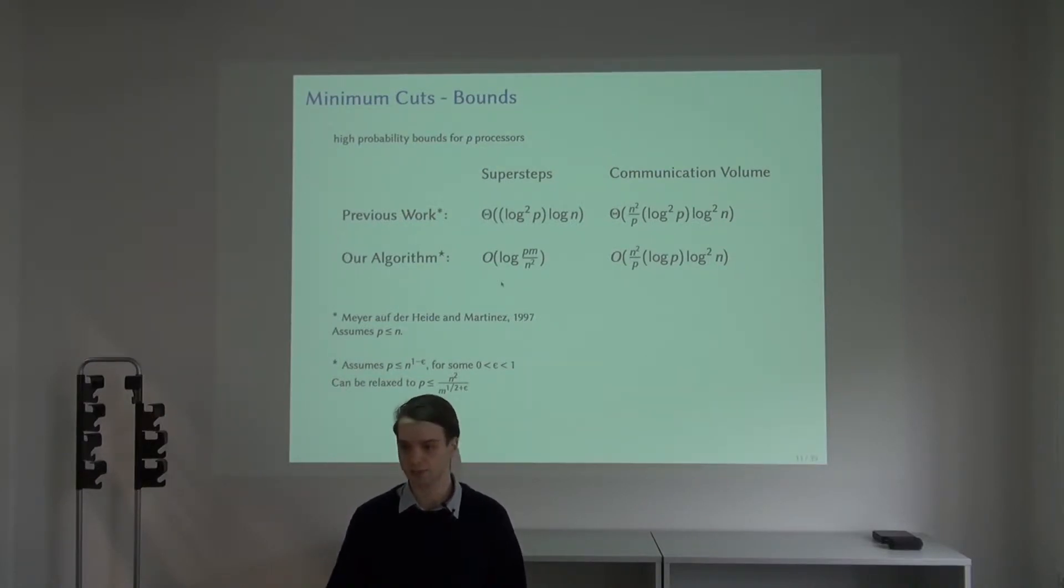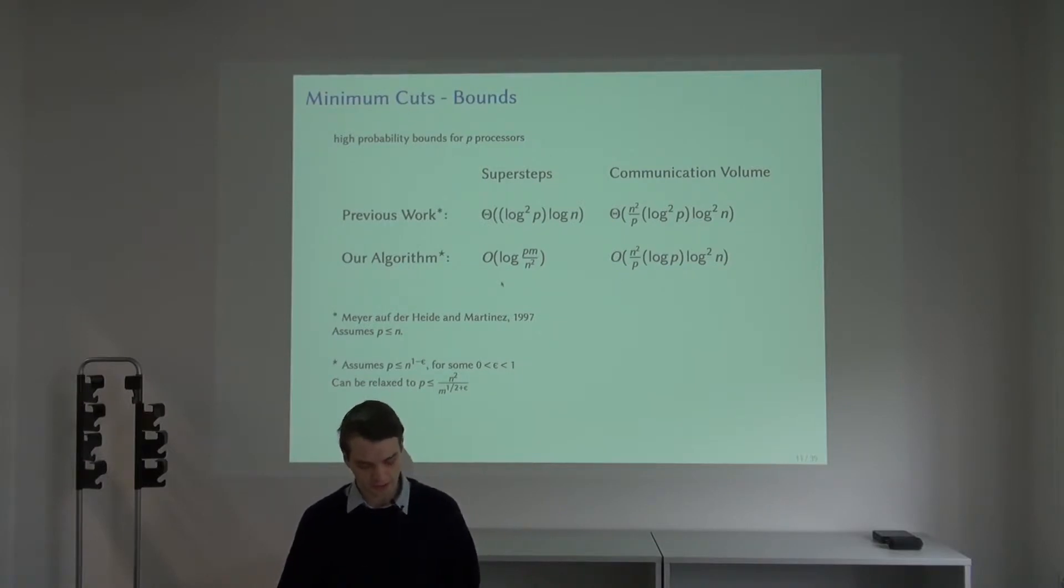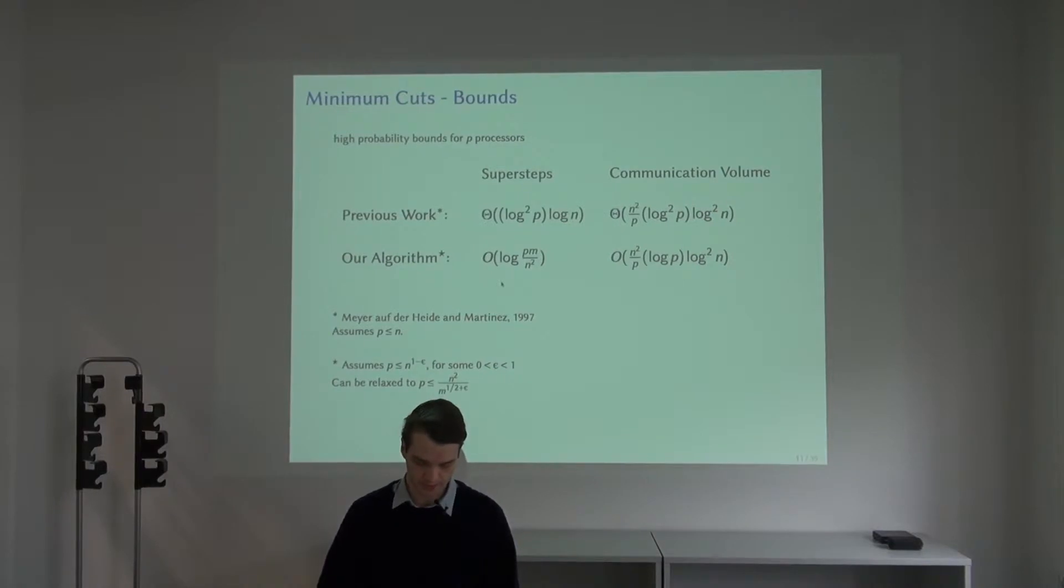The number of super steps is now just one logarithmic factor. If we take a closer look, it's always big O of log p, the number of processors. But if the graph is sparse and m over n squared is large, then it's log p over n, and if the number of processors is less than the number of vertices, this is constant. This turned out to be important in practice, this improvement for sparse graphs. The communication volume is smaller than the previous work by a logarithmic factor.